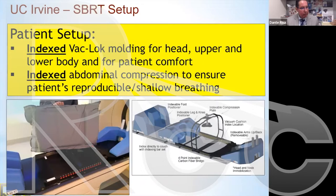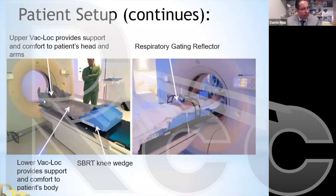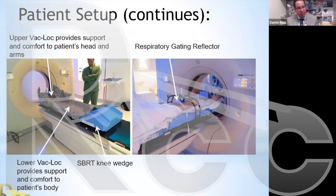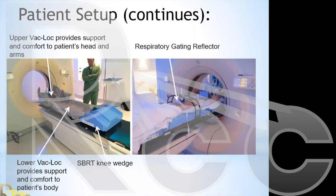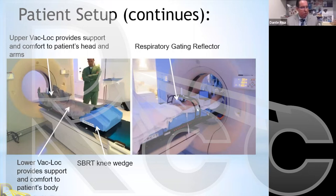Along with that, we have adjustable supports for the knees, legs, and feet, as well as handlebars for the arms. We use two types of backlogs, both indexed to the frame, shaped to provide arm support. Some patients do not feel comfortable being restricted by the backlog, and we accommodate for those cases as well.